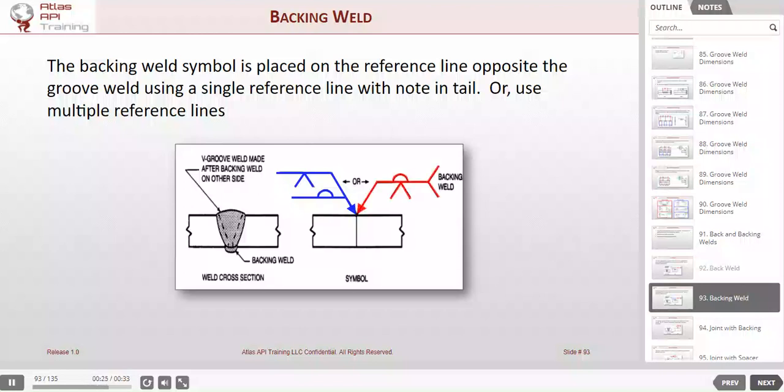And then we have the same thing noted on a single reference line, but because it's on a single reference line, backing weld is noted in the tail.